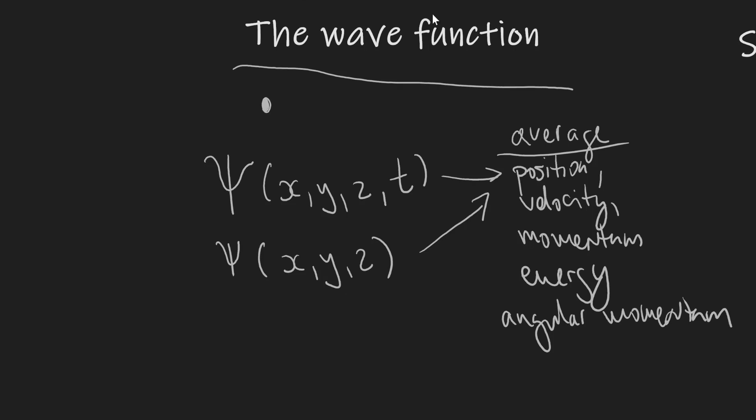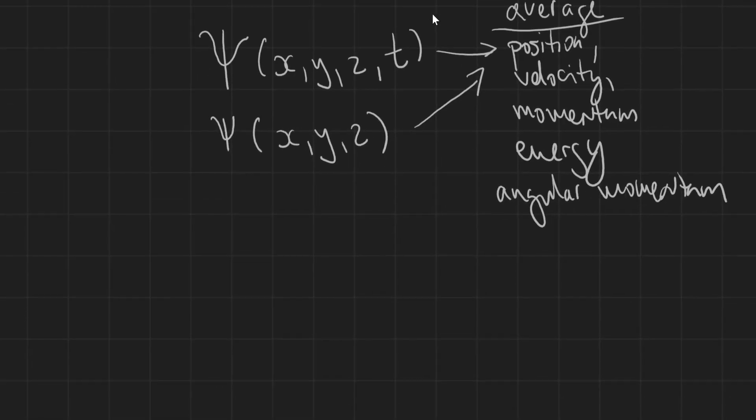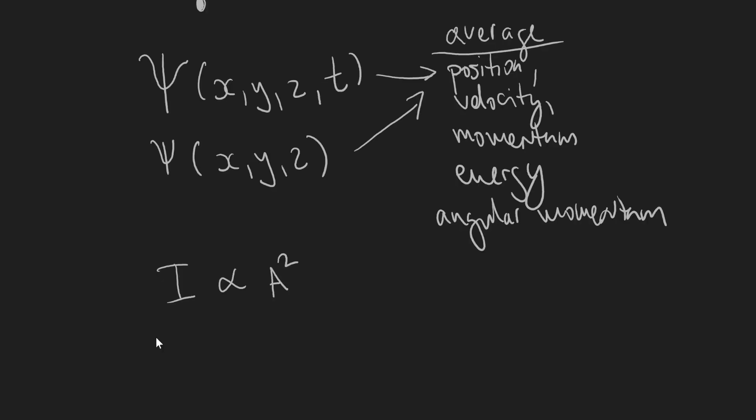The idea of a wave function is not exactly new. For instance in electromagnetism the intensity of a wave is actually proportional to the square of the amplitude of the electric field, and this actually means that the square of the electric field magnitude is proportional to the probability of finding a photon at a particular point.